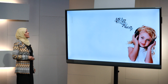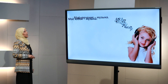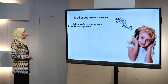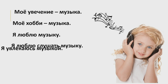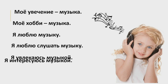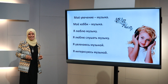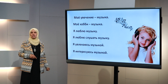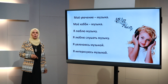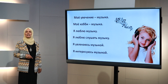Говоря об увлечении, можно использовать разные конструкции. Например: «моё увлечение — это музыка», «моё хобби — это музыка», «я люблю музыку», «я люблю слушать музыку», «я увлекаюсь музыкой», «я интересуюсь музыкой». Почему надо всё это знать? Чтобы не повторять те же самые конструкции, когда я говорю о моих увлечениях и об увлечениях наших друзей или родственников. В таких случаях интересно использовать разные конструкции и разные выражения.